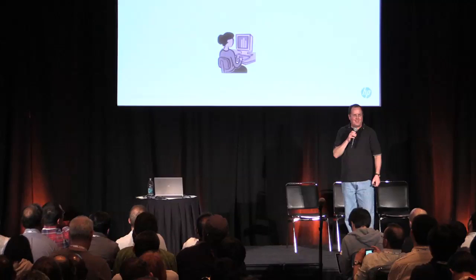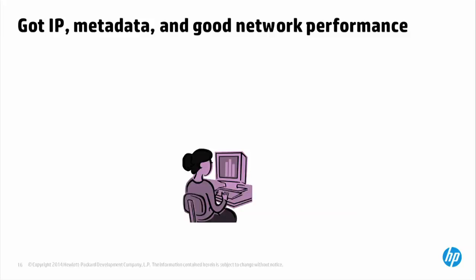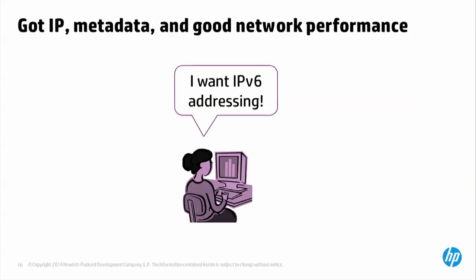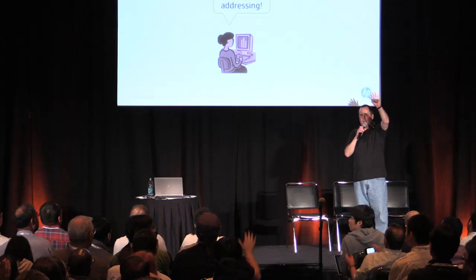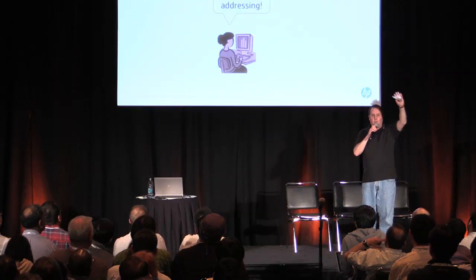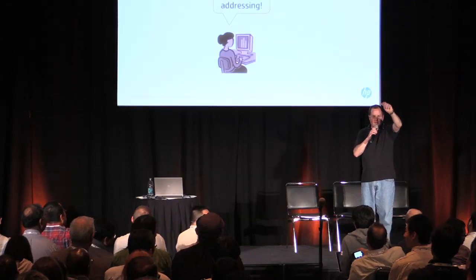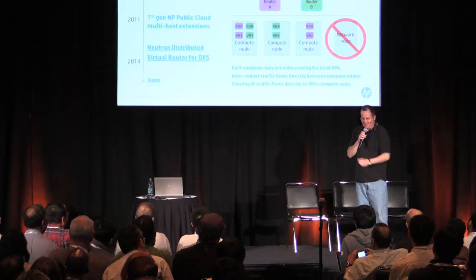Checking back in with Sally — she's still not happy. For those who may have attended sessions earlier this week, IPv6 is not quite there yet. The team at Comcast and folks at HP are really driving that forward and hoping to make a lot of progress during Juno. Sally's going to have to wait a little longer on IPv6 addressing.